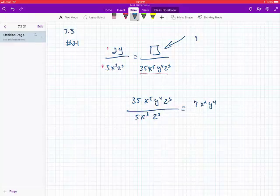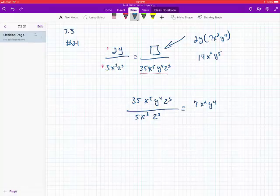y to the 4th, which is going to give me 14x squared, y to the 5th. So the answer, or that box, is going to equal 14x squared, y.